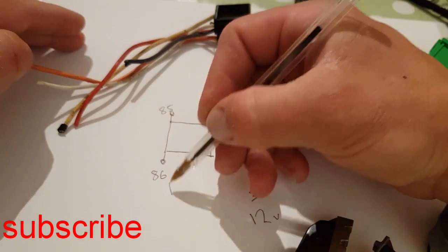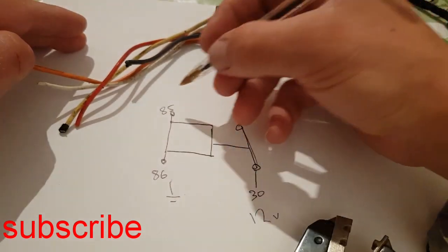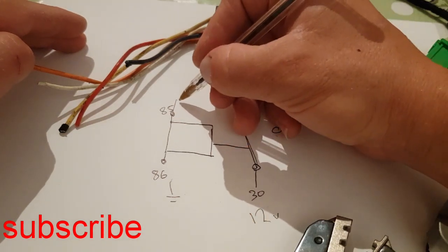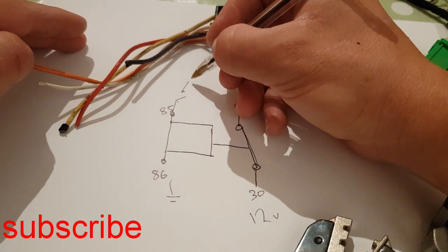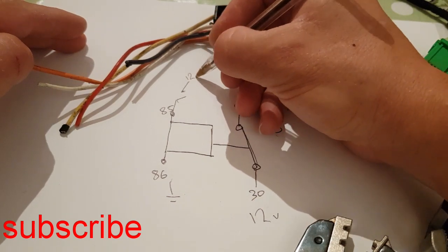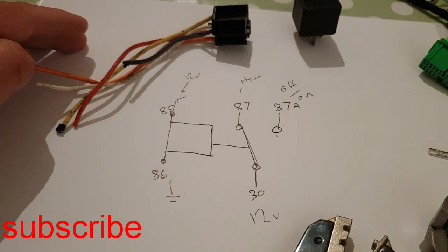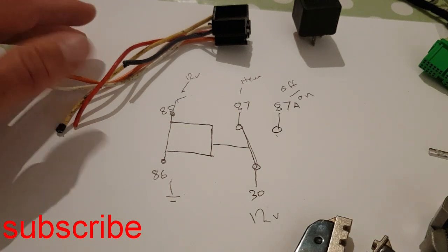So then this would go to your item. This would be off or on. This would go to ground and this would go to a switched 12 volt or 24 volt. So quite easy to wire up a relay.